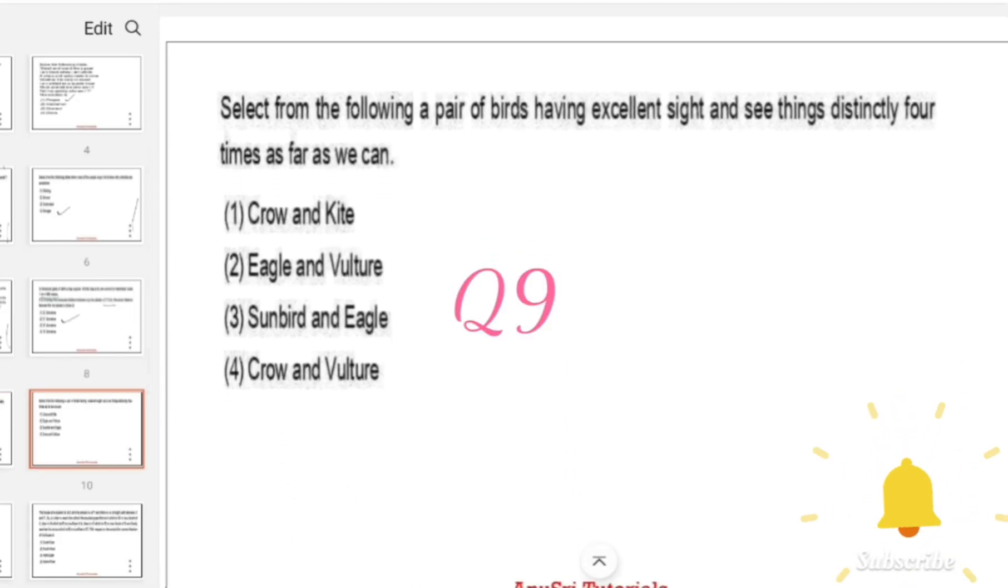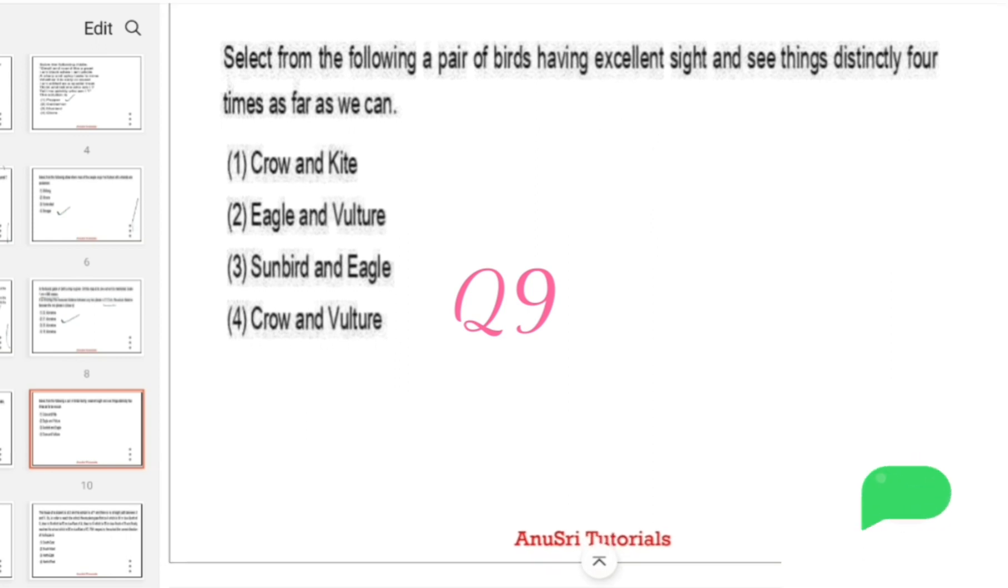Select the following pair of birds having an excellent sight and can see things distantly four times as far as we can. First option is Crow and kite, second one is Eagle and vulture, third one Sunbird and eagle, fourth one is Crow and vulture.